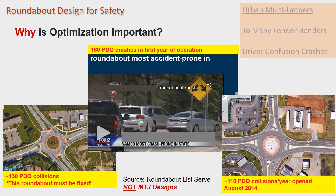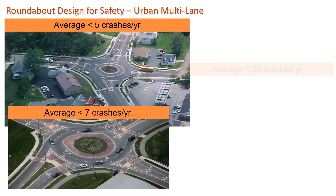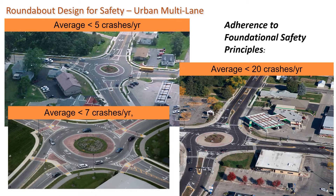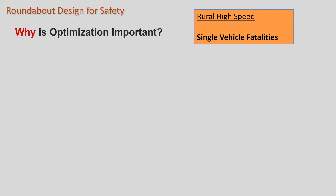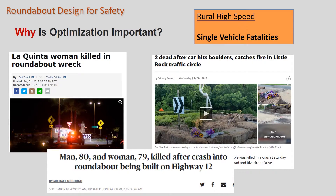As I look at projects I've been involved with over the years, I ask: what are the crash rates? This is all relatively new as an industry — we've only been putting roundabouts in for about 20 years. Some roundabouts are open and having fewer than 20 or even fewer than 10 crashes per year. What's the difference between projects having excessive PDOs and those that aren't? We'll look at an urban multi-lane example and a high-speed rural example with important foundational design principles.